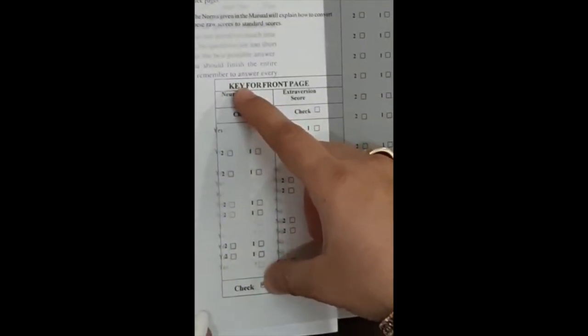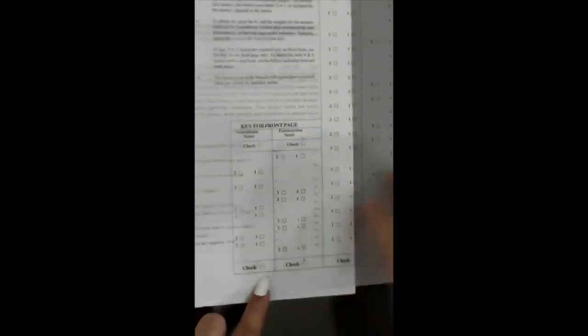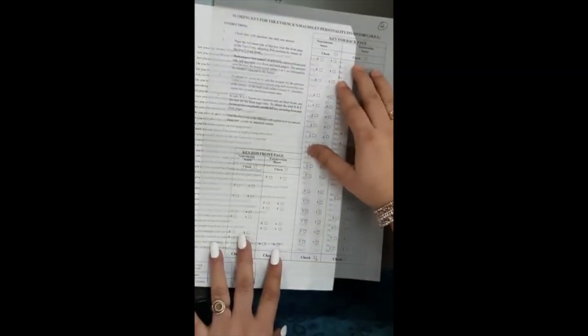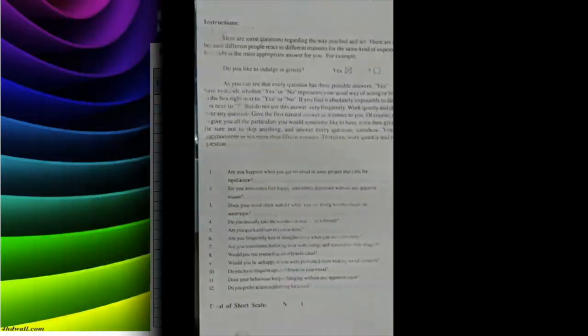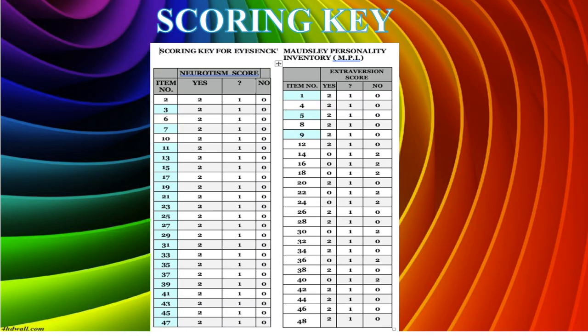You will score for neuroticism first, then place the extroversion scale checks and total up the extroversion score. Then do the same on the reverse page in a similar manner. If conducting the full long version, take scores for all 48 items. If using only the short scale, score only the first 12 items. You can also use this scoring key to get the raw score on introversion as well as the neuroticism scale. After finishing scoring, you will have two scores: the neuroticism score and the extroversion score.